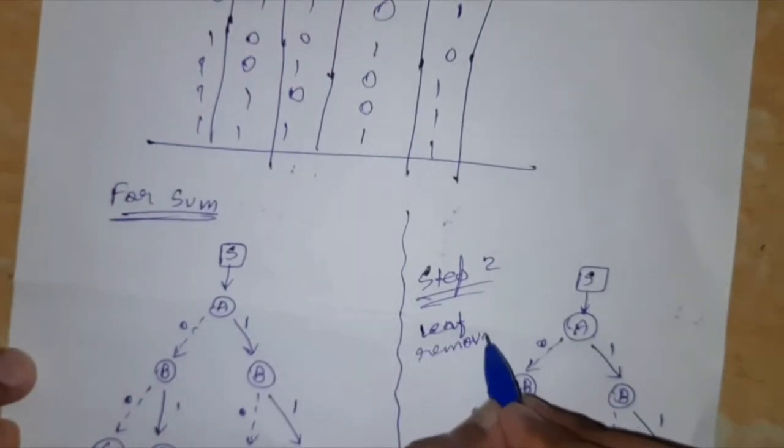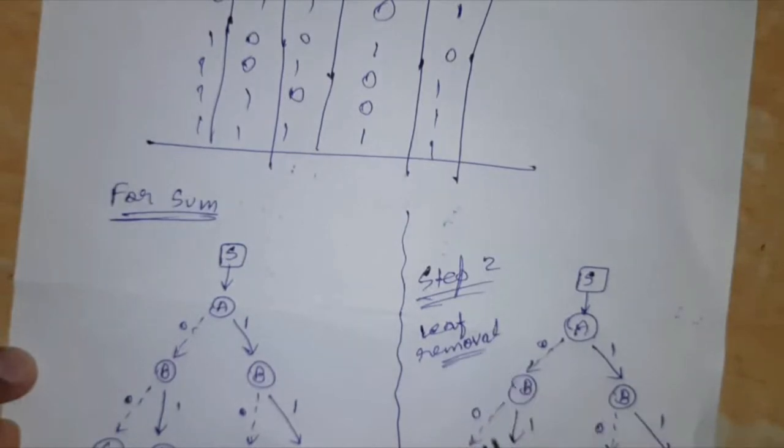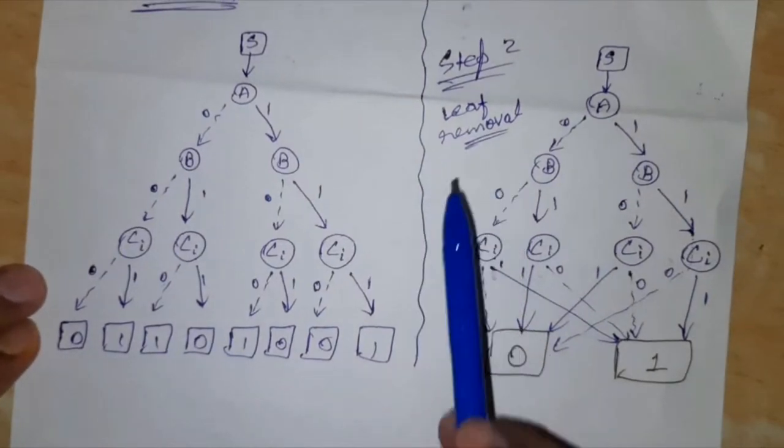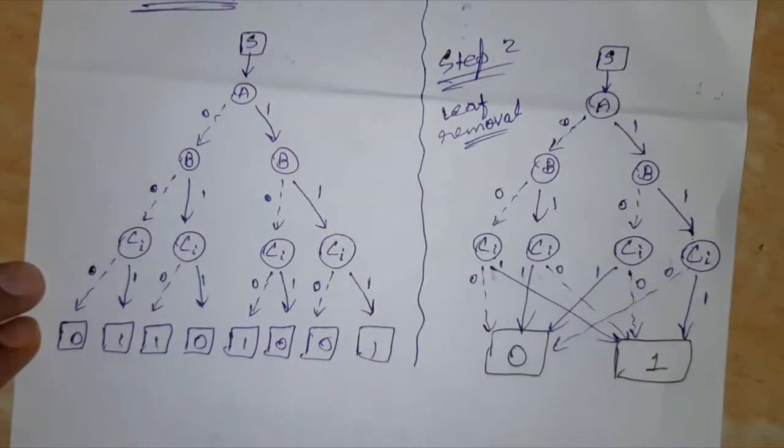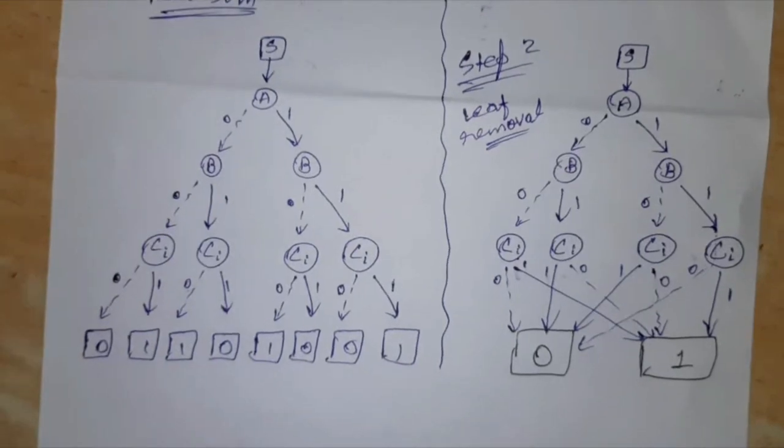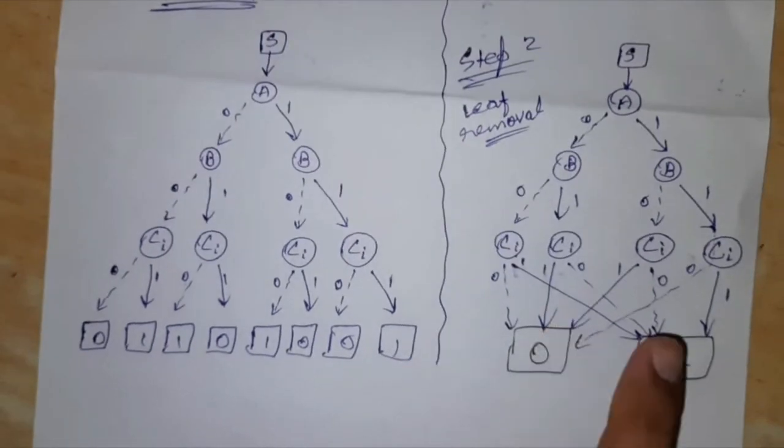Sometimes the examiners require the students to mention the steps and detail them, like what type of removal it is: vertex removal or leaf removal or redundant nodes removal.